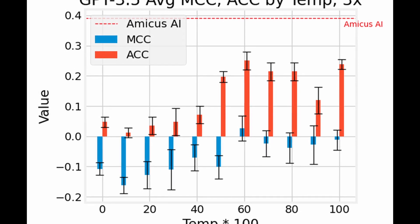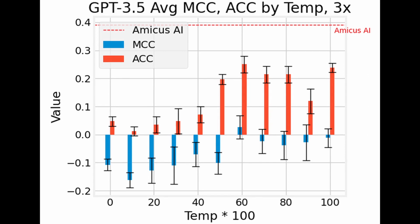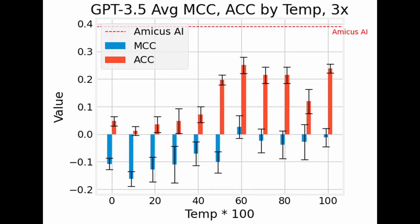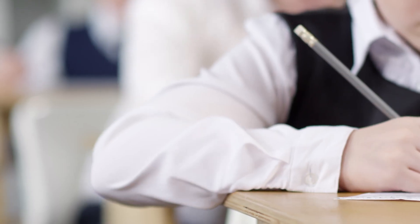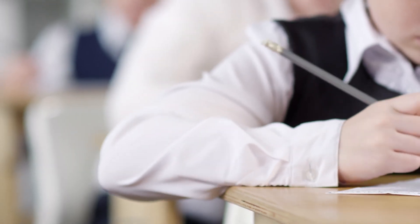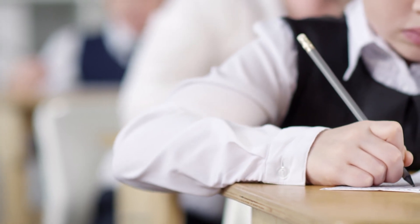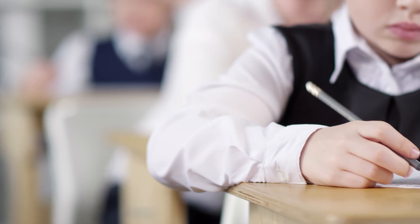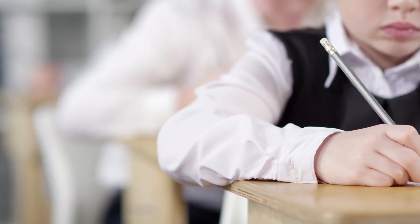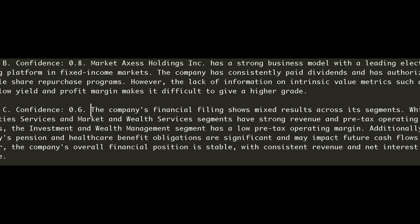In our previous video, we compared ChatGPT 3.5 against an ensemble model for financial analysis. We measured performance using a trained validation test structure to have a fair comparison. The key finding was that ChatGPT's effectiveness hinged on the temperature parameter, and while not outperforming the ensemble, the AI exhibited potential by generating interpretable predictions and confidence levels.